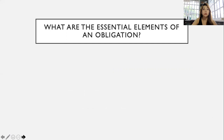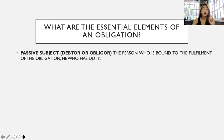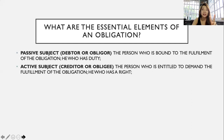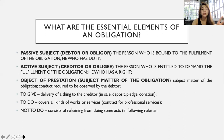What are the essential elements of an obligation? There are four. First is the passive subject, or the debtor or obliger — the person who is bound for the fulfillment of the obligation; he is the one with the duty. Second is the active subject, or the creditor or obligee — the person who is entitled to demand the fulfillment of the obligation; he has the right. Third is the object or prestation, the subject matter of the obligation — the conduct required to be observed by the debtor. There are three kinds: to give, which is delivery of a thing to the creditor as in sale, deposit, pledge, or donation; to do, which covers all kinds of work or services such as contracts for professional services; and not to do, which consists of refraining from doing something.